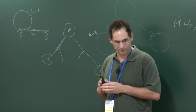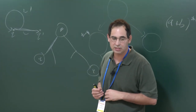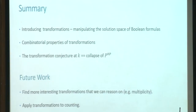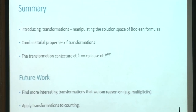This is the main concept of this talk. I introduced transformations as a way of manipulating the solution space, showed some combinatorial properties — and there are more than one might think; I like to think of it as a Rubik's cube where you apply transformation after transformation and play with the solution space. I also presented the conjecture that if it holds, then P^{#P} collapses. For future work, we want to find more interesting transformations such as multiplication to see how they change the solution space, and also apply these ideas to practical counting problems such as approximate counting. Thank you.